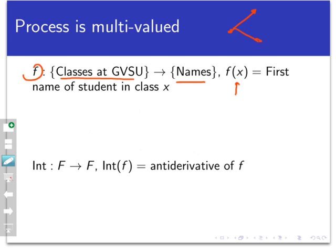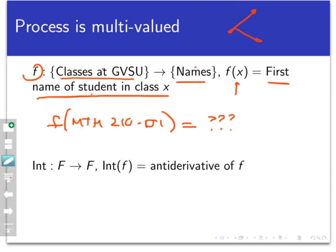And so the process says take a class X, that would be like Math 210 Section 1, and return the first name of a student in class X. Now, that is definitely not a well-defined function because although there's a process specified and there's a domain and a codomain, the problem is that if I put in a particular class here, like Math 210 Section 1, whose name am I supposed to return here? There are 18 students in that particular class, and I don't know which one to pick.